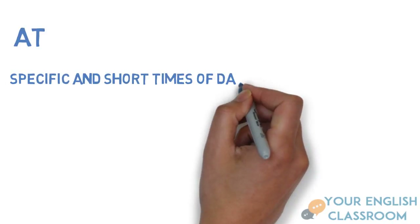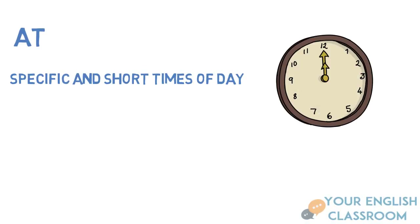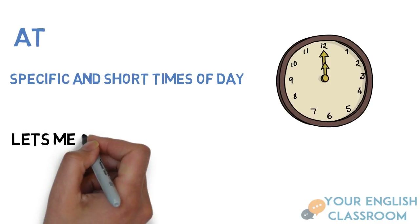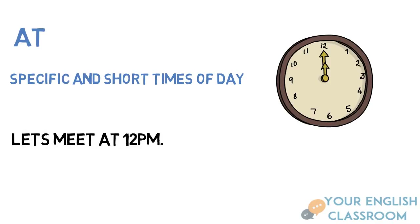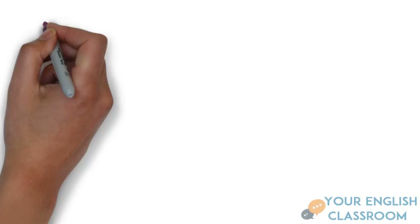The first preposition is 'at,' and this is used for specific and short times of the day. For example, we would say 'Let's meet at 12 p.m.' or 'She left at 1 p.m.' — specific points of the day use 'at.'